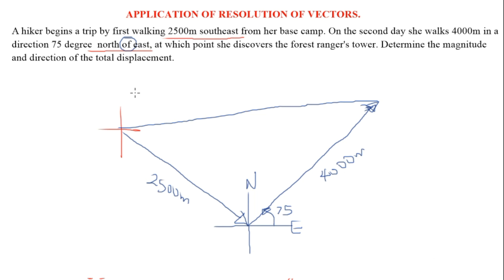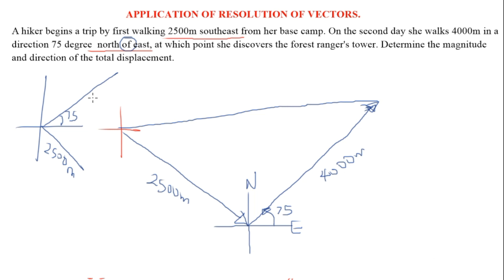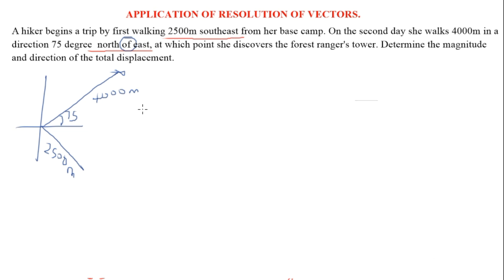Let me draw the diagram on one side so we can resolve and find the final answer. She moves 2500 meters southeast, then 4000 meters at 75 degrees north of east. We now resolve these vectors — vector resolution means breaking each vector into its x-axis and y-axis components.